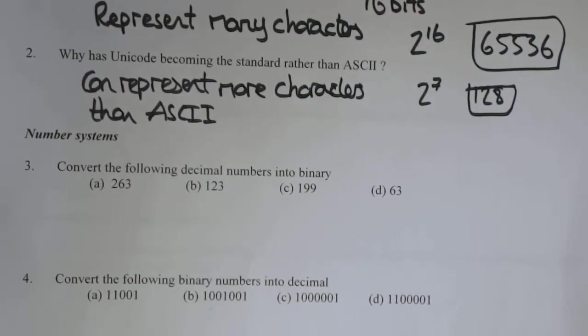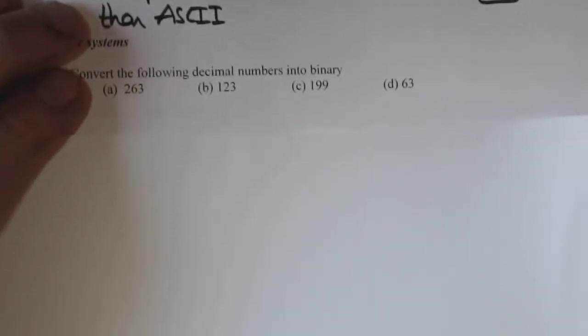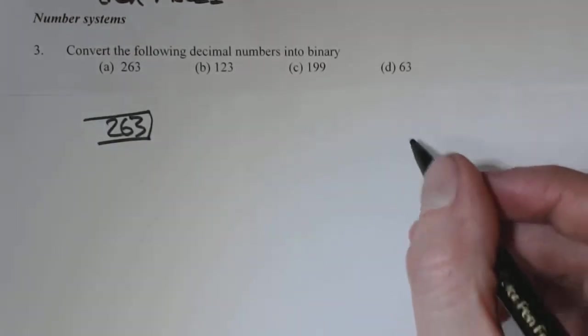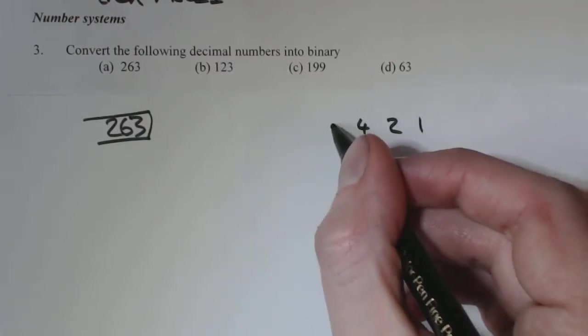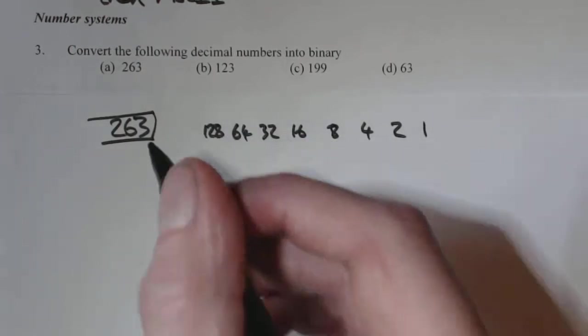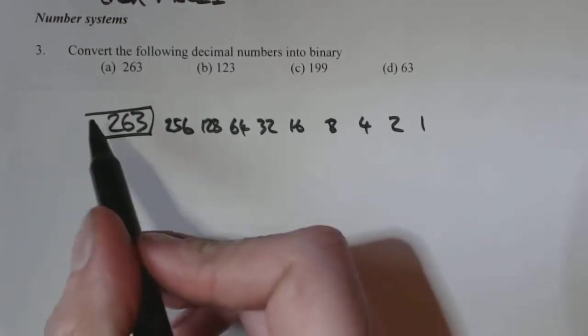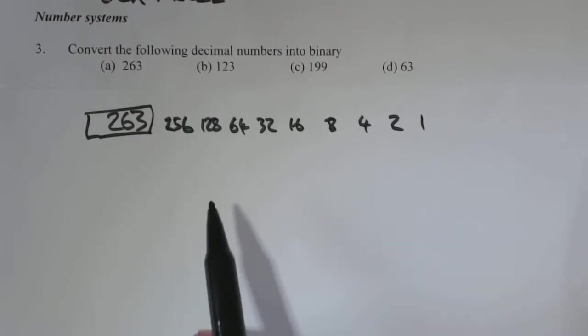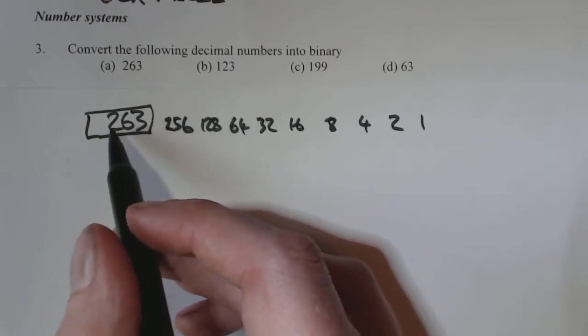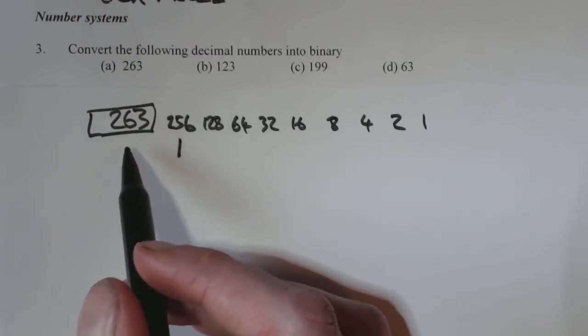Now, this one, we're converting decimal into binary. We'll get this another wee sheet of paper that we can use for the working. Okay, so the first one is 263. So we go 1, 2, 4, 8, 16, 32, 64, 128, 256. So it's one more than you're normally used to. So 256 goes into 263 once.